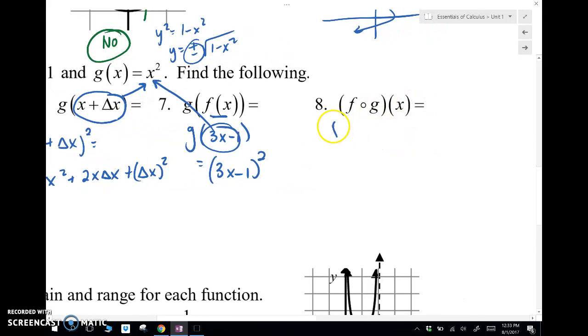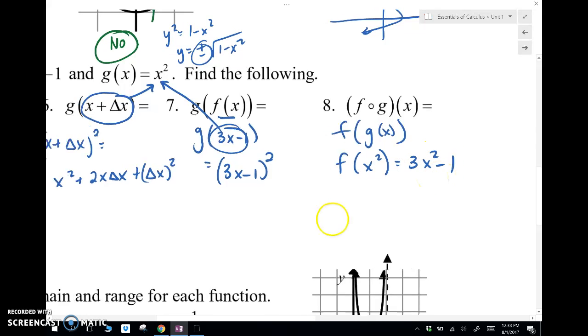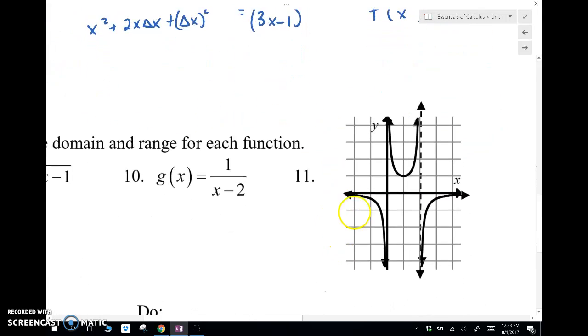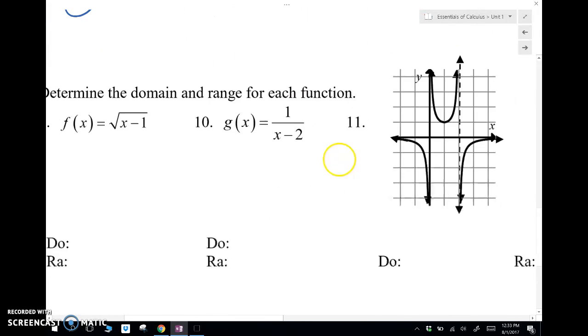f of g, f of g is f of g of x. So that's just another way of writing a composite function. So g of x was x squared. So I'm going to take x squared and plug it in anywhere I see an x in the f function. All right, so there are some composite functions or evaluating functions.